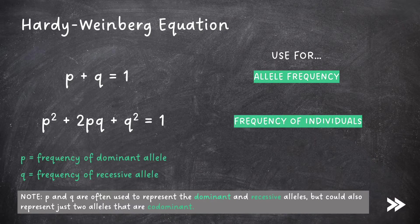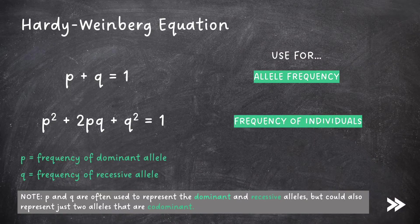In the first equation, if we calculate p, this gives us the proportion of dominant alleles in a population, and if we calculate q, this gives us the proportion of recessive alleles. The same principle applies for the frequency of individuals. If we calculate p², this gives us the proportion of individuals with a homozygous dominant genotype. If we calculate 2pq, this gives us the proportion of individuals with a heterozygous genotype. And if we calculate q², this gives us the proportion of individuals with a homozygous recessive genotype.